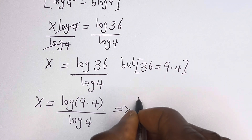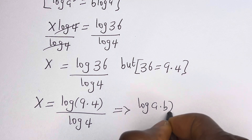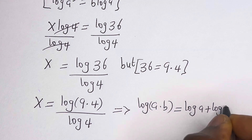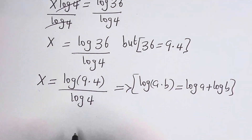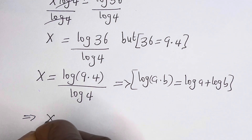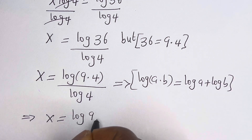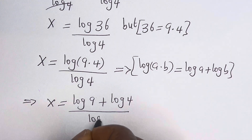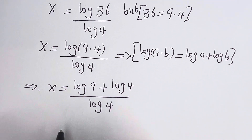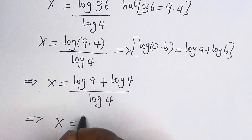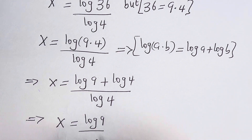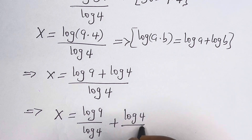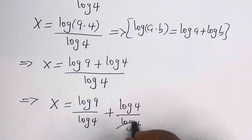Note that if you have log(a × b), this is equal to log a plus log b. Then here we have s is equal to (log 9 + log 4) over log 4. This is s is equal to log 9 over log 4 plus log 4 over log 4. This log 4 cancels that log 4.